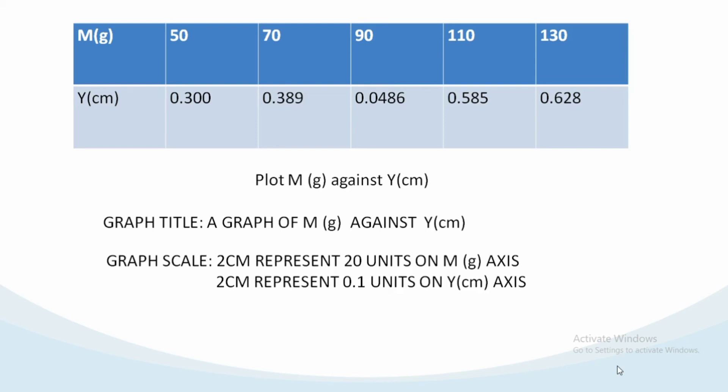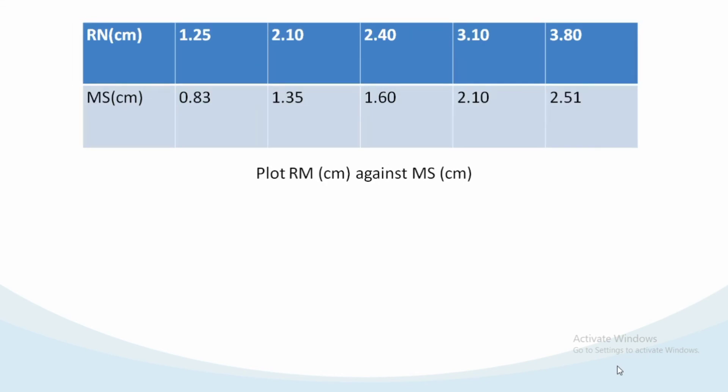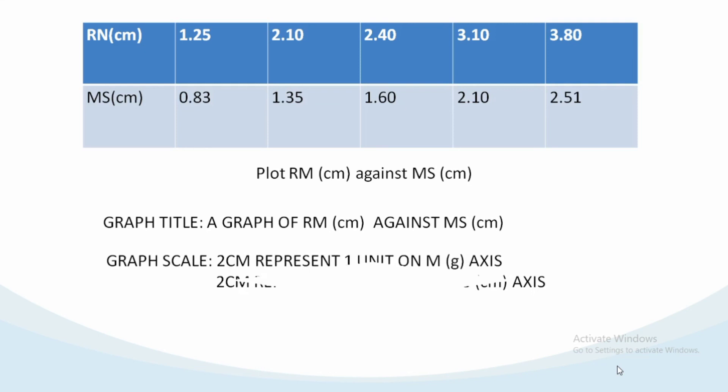Let's look at the last table. We are having RM centimeter against MS in centimeter. The values are 1.25, 2.10, 2.40, 3.10, 3.80. On the MS centimeter we have 0.83, 1.35, 1.60, 2.10, 2.51. If the instruction states plot RM centimeter against MS centimeter, the graph title is a graph of RM(cm) against MS(cm).